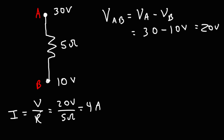Conventional current flows from high potential to low potential — from A to B in this case. Keep in mind the direction of electron flow is opposite: electrons, being negatively charged, flow from low potential to high potential, toward the more positive side. Conventional current represents the flow of positive charge flowing toward the more negative side.